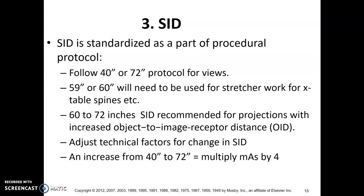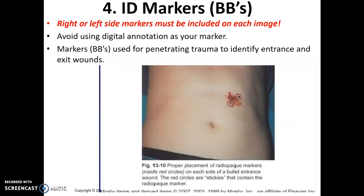As a reminder of the cheater method: when going from 40 to 72 inches, multiply your mAs by four. Still use your right and left markers on images and ensure lateral borders whenever possible. Avoid using digital annotation. BBs — small skin markers — may be used for stabbings or shootings to mark entrance and exit points.